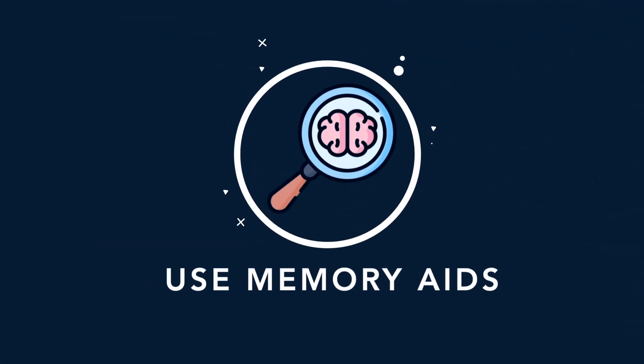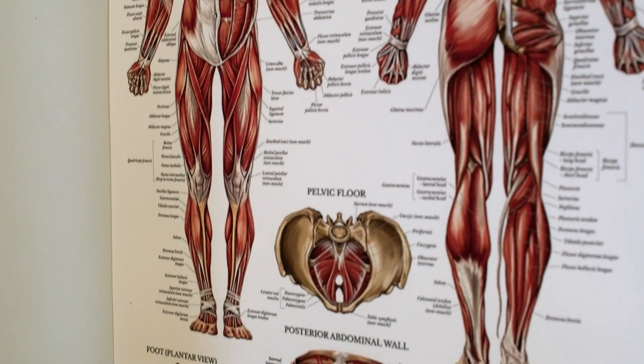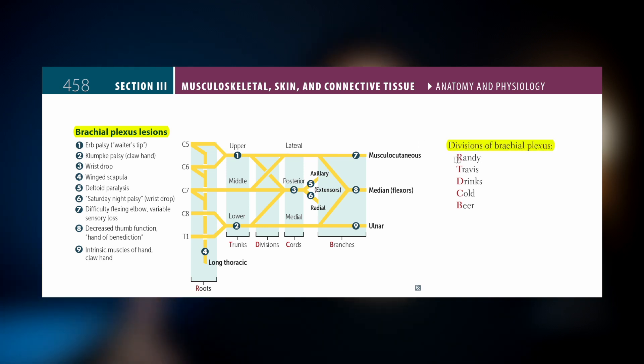Tip number three is to use memory aids. After you've understood the concepts, the next step is committing them to memory. Remembering anatomical structures can be very difficult because most of the time their names seem like random, arbitrary words. This is where using mnemonics can be helpful. For example, to memorize the divisions of the brachial plexus, I remember it using the mnemonic 'Randy Travis Drinks Cold Beer,' which stands for the roots, trunks, divisions, cords, and branches.